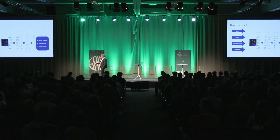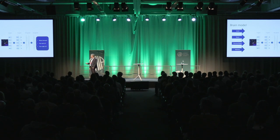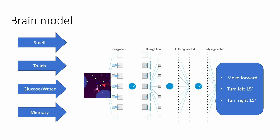We feed in this picture of what the hare sees, and out comes the actions. We only have three actions: move forward, turn left or right. We also feed in other inputs like smells, touch, and current energy and hydration levels. We also have a memory — LSTM in our case.